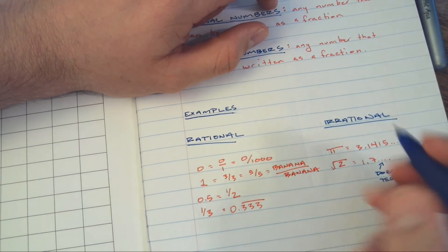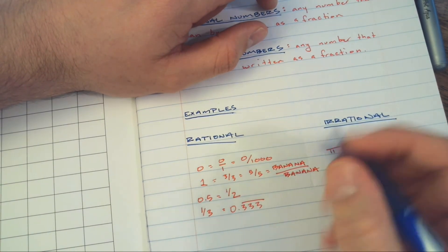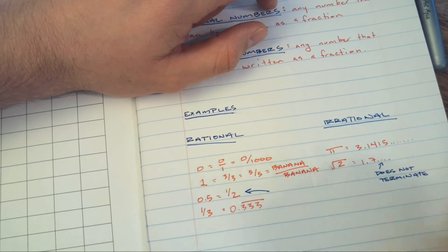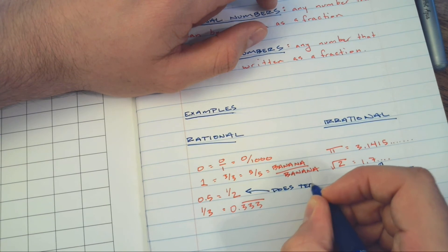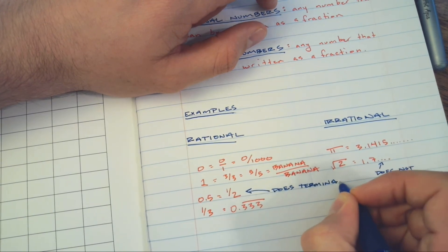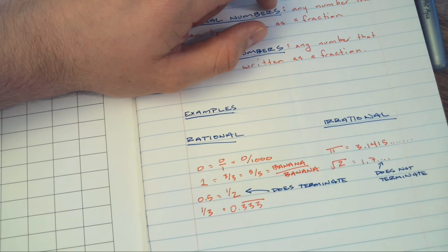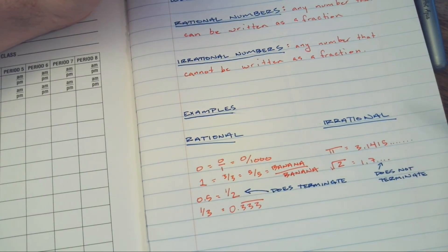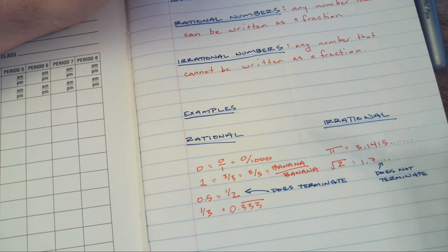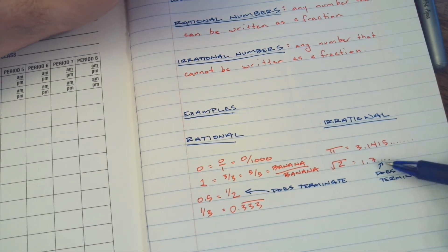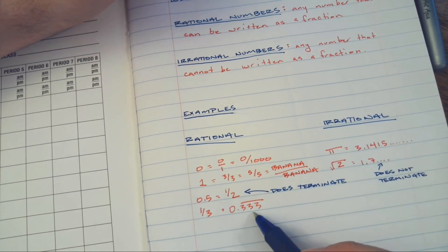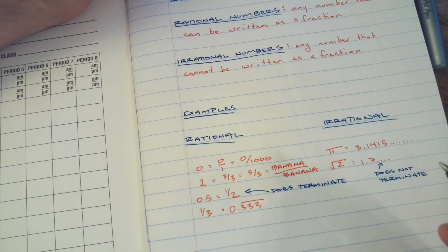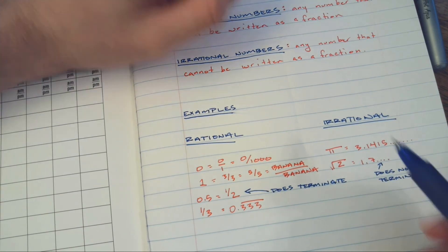All right, what about this? Well, this guy, 0.5, does terminate. So instead of our fraction definition, what happens if we think about it in terms of numbers that either terminate or don't? Well, it works for most cases. These numbers do not terminate, just keep going. But additionally, this guy over here, 0.333... - that is one-third, and it doesn't terminate either.